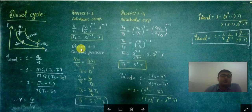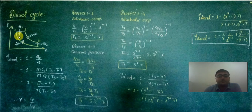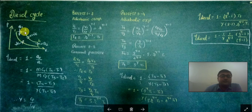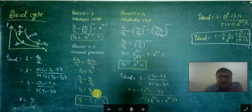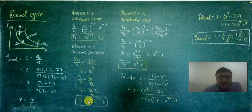For the constant pressure process 2-to-3 (heat addition), we use: p2·v2/T2 = p3·v3/T3. Since p2 = p3, this simplifies to v2/T2 = v3/T3, giving T3 = (v3/v2)·T2. Substituting T2 = r^(γ−1)·T1 and noting that v3/v2 is the cutoff ratio ρ, we get T3 = ρ · r^(γ−1) · T1.